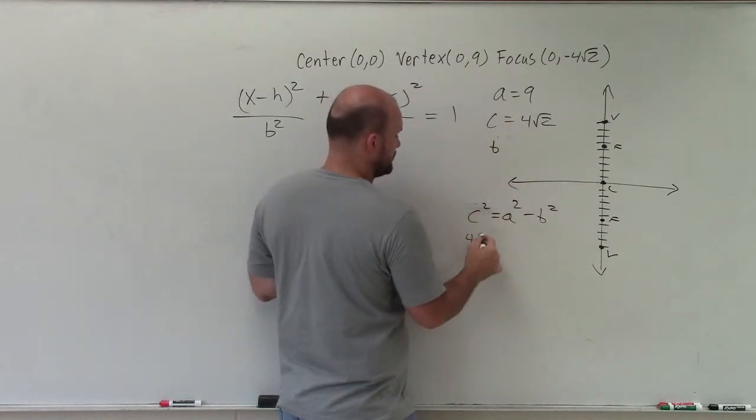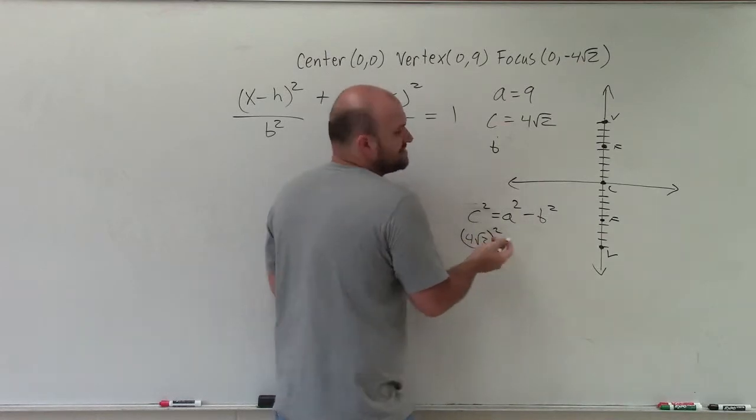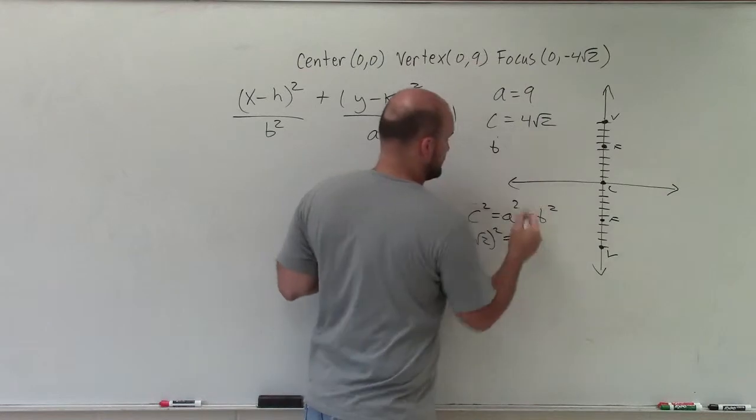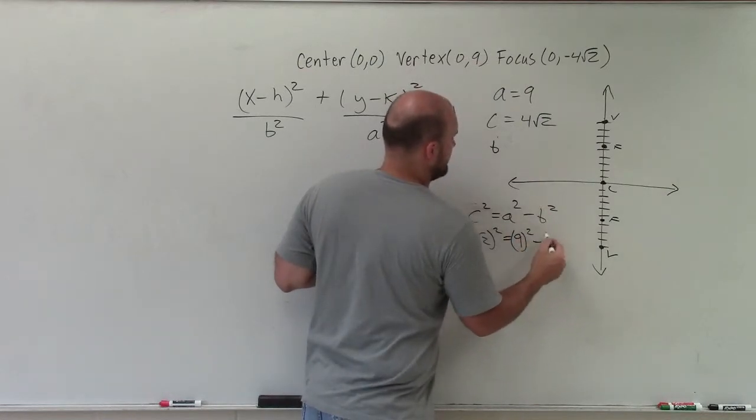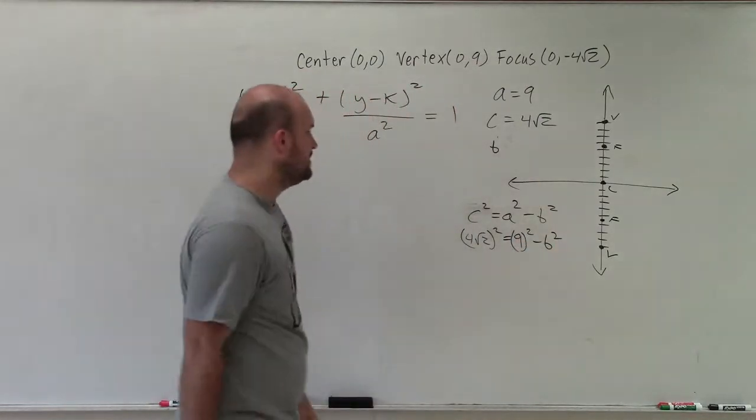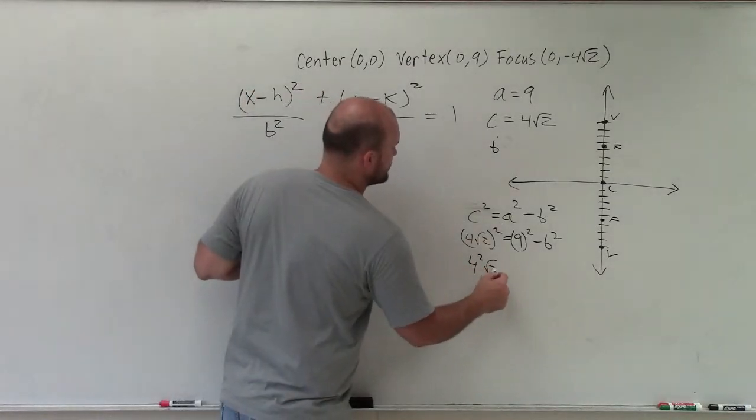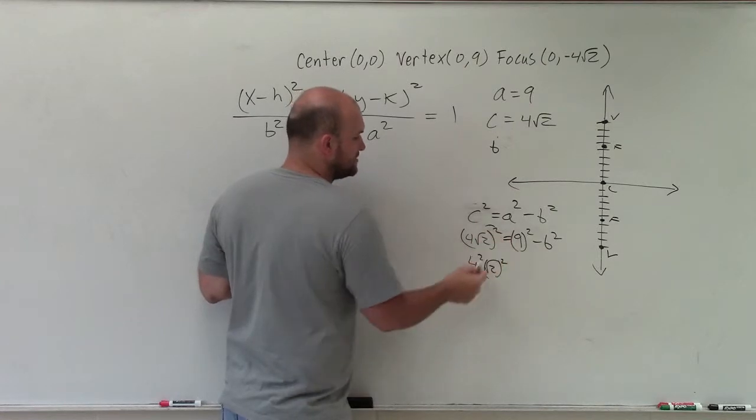Well, c² is (4√2)². Since it's squared, it doesn't matter if you use positive or negative. You're going to square it anyways. Equals a², which is 9, minus b². So I need to make sure I square the 4 as well as the √2. You square both of them. That distributes. So that's going to be 16 times 2, which is 32.